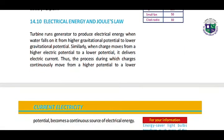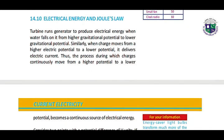Electrical energy and Joule's law. A turbine runs a generator to produce electrical energy when water falls on it from higher gravitational potential to lower gravitational potential. Similarly, when charges come from higher electric potential to lower potential, they deliver electric current.